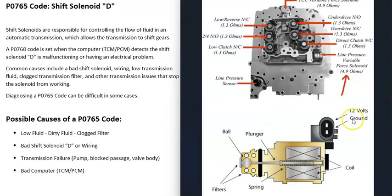You can also use a multimeter to test the wiring going to the solenoid — check that you're getting voltage going to it. Keep in mind that if there's any kind of problem in the wiring going to the solenoid, such as an open circuit or a short, that's going to cause problems.